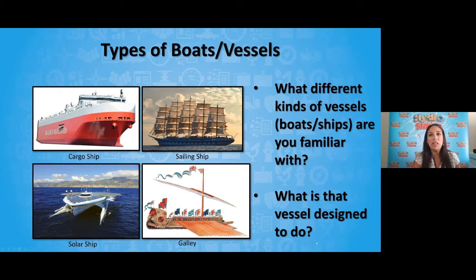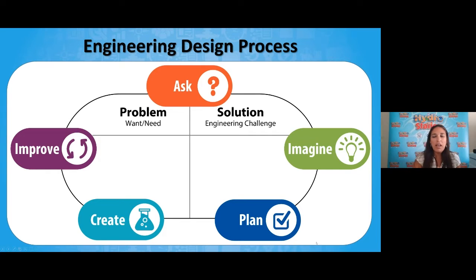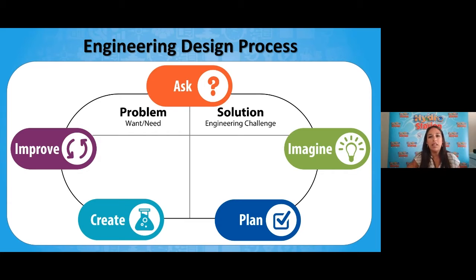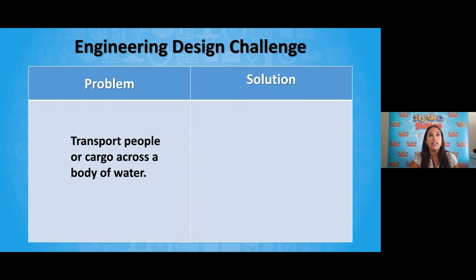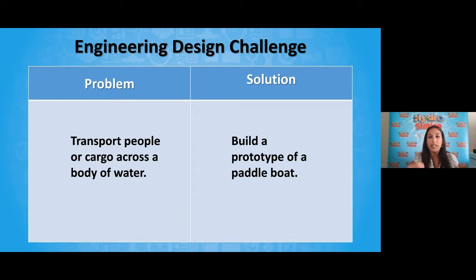Now that we know a little bit about the work of a marine engineer, we're going to actually take on that role. To help guide us, we'll work through the steps of the engineering design process. We'll start off by asking questions, imagine some big potential ideas, plan out our model, and then actually create it. Finally, as we're creating it, we'll test it and see if there are any improvements to make — which brings us to our challenge: we want to transport people or cargo across a body of water.